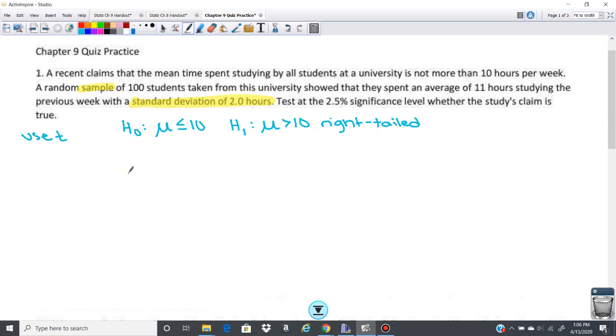So we know we're using t. Let's just gather what we have. We have a sample size of 100. We have inside the sample an x-bar, so our mean of our sample is 11. And we have a standard deviation inside that x-bar of 2 hours. We want a significance level of 2.5%, so 0.025 is going to be our alpha there.